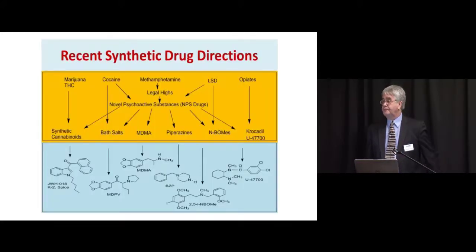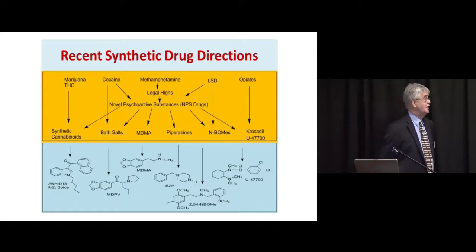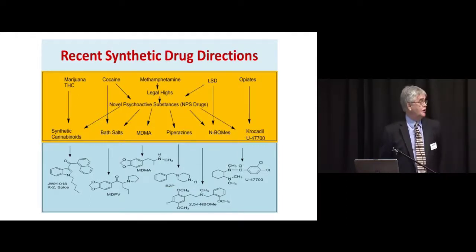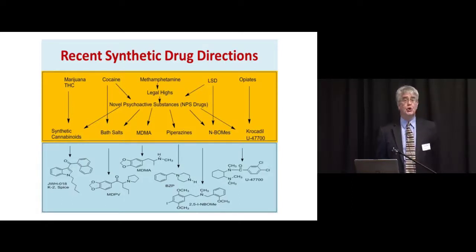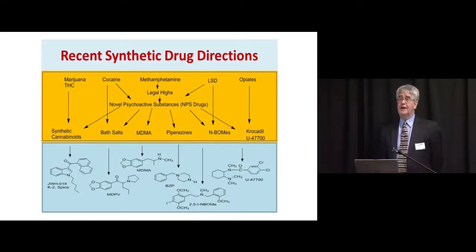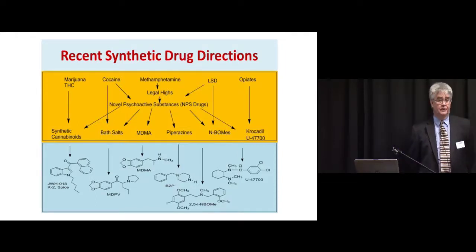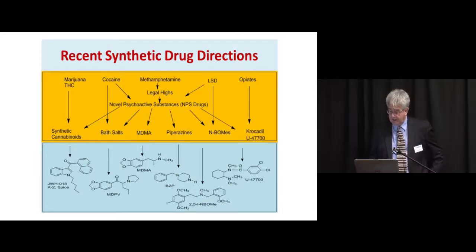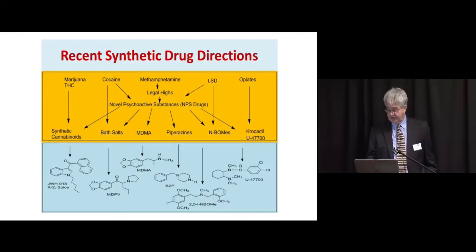Across the top of this slide are the names of the old drugs of abuse we are accustomed to thinking about: marijuana, cocaine, LSD, opiates, methamphetamine. Across the bottom of the yellow region are the various new subsets that have come along as designer molecules related to those categories. Those categories are not one molecule — in many cases they are hundreds of molecules, making this quite complicated. Some of the structures for those categories are shown as examples.